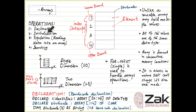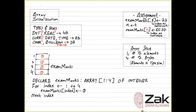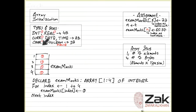The operations we are going to do are: declaration, initialization, population, reading data into an array, and searching. We need to remember data types and their sizes. Integer and real are of four bytes. Currency, date, and time are eight bytes. Character and boolean are one byte each.